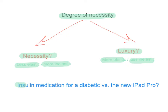For example, insulin medication for a diabetic — someone who requires regular insulin — it's quite irrelevant what the price is, because they need this medication. So their demand is likely to be very inelastic, because for this consumer, insulin medication is a necessity. Versus, if you're someone who likes to collect the latest gadgets, the new iPad Pro is a luxury — it's not really something you need. So demand is likely to be a lot more elastic.